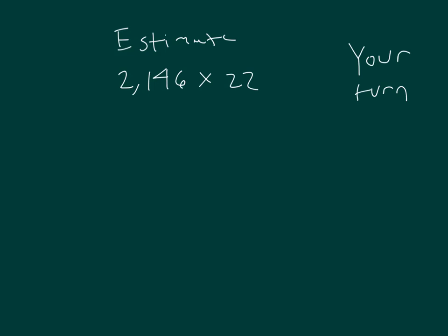Okay, it's your turn again. Estimate the product of 2,146 times 22. You could round the factors to 2,000 times 20, which would equal 4 zeros. 2 times 2 is 4, which would equal 40,000.